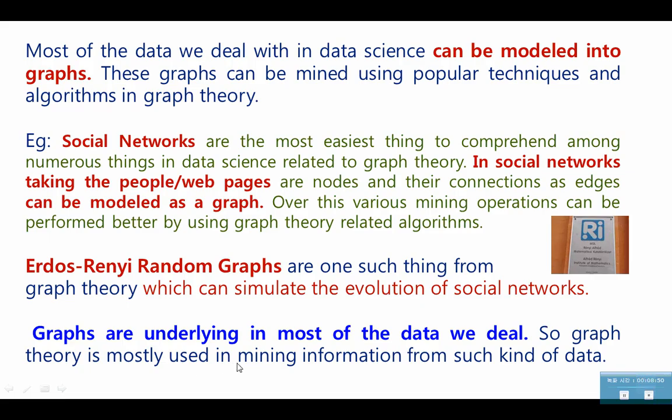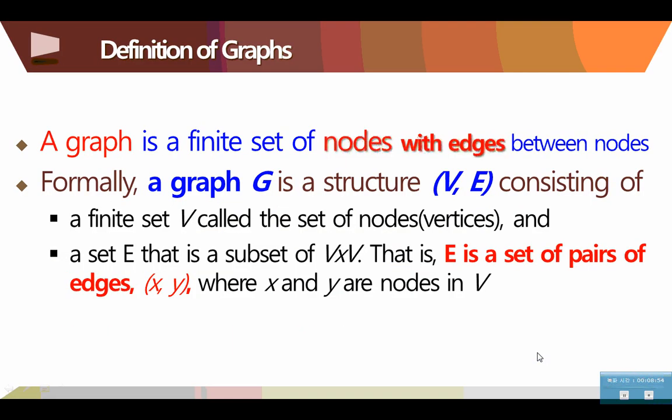I went to the Rényi Institute in Hungary, in Budapest, and this is a picture that I took at Rényi Institute. This Rényi Institute has prominent mathematicians who are specialists on combinatorics and number theories and graph theories as well. Here, the Erdős-Rényi random graphs are the things that you may face in the study of big data with graphs. Graphs are underlying in most of the data we deal. So, graph theory is mostly used in mining information from such kind of data.